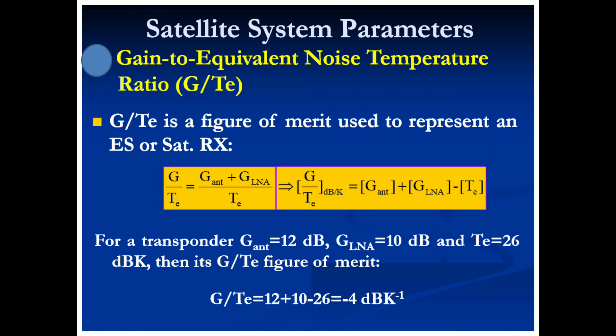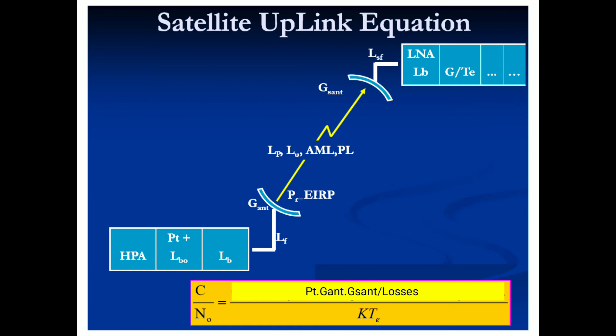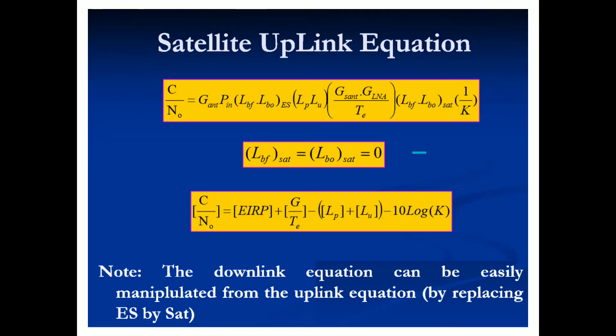G/T, expressed as G minus T_e in dB, has units of dB per Kelvin. The total signal-to-noise ratio for a given uplink is PT · G_antenna · G_s / (losses · kT_e). In dB form this becomes: EIRP + G/T_e − losses − 10·log(k). Instead of separating k and T, we directly use the G/T_e term, which will already be specified in the numerical problem.